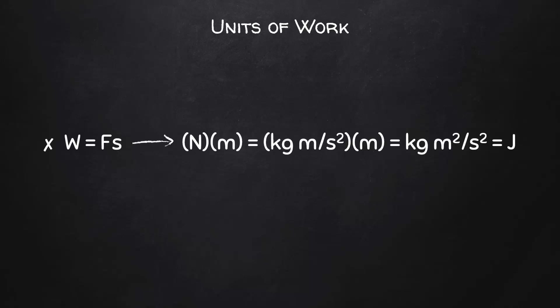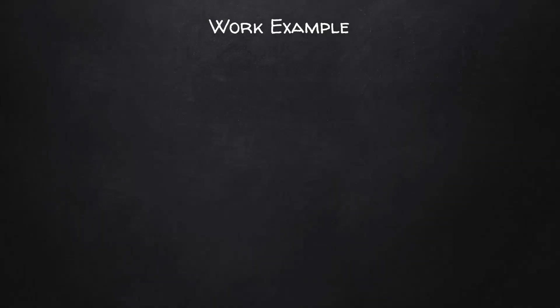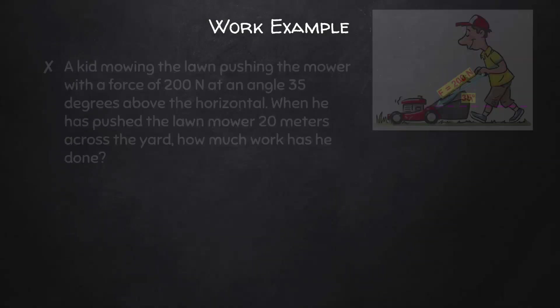Let's take a look at the units of work. Since work is force times displacement, we would substitute newtons times meters, which is kilogram meters per second squared times meters, giving us kilogram meters squared per second squared. That's a joule. If work and energy are the same thing, they better have the same units. Let's take a look at a work example.